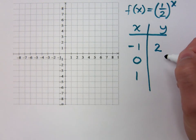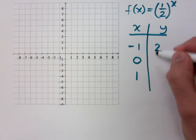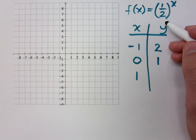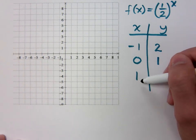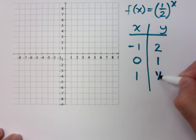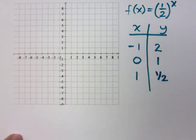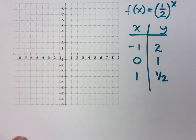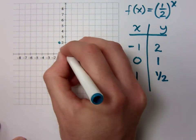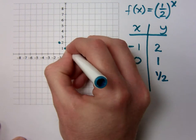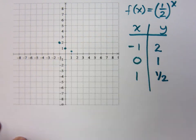2. If I plug in 0, what do I get? I get 1. 1 half to the 0, of course, is 1. If I plug in 1, anything to the first power is itself. So to plot these points: negative 1, 2; 0, 1; 1, 1 half.